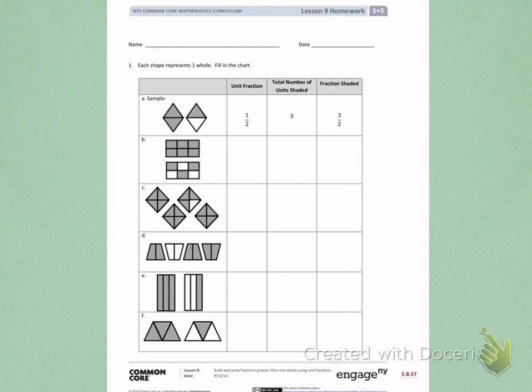When I look at the sample, I see that they first wrote a unit fraction for each one whole, which is 1 half, because each shape is divided into two equal parts. Next, they counted how many parts were shaded, which was a total of 3. Then, to write the fraction that is shaded, they have 3 as the numerator, because 3 parts are shaded. Each of the parts are divided into 2, so the fraction is 3 halves.